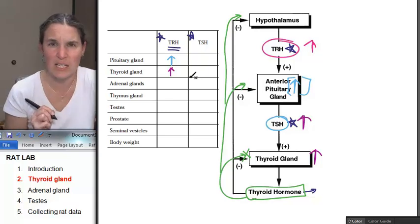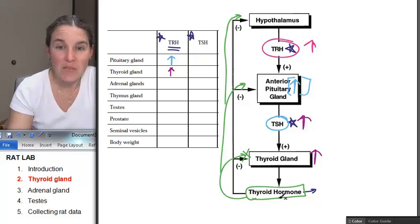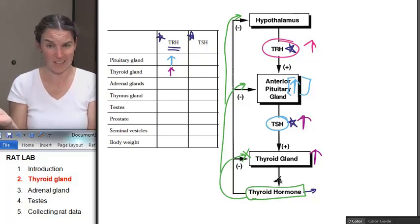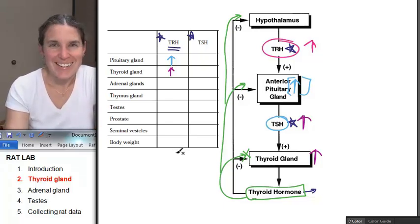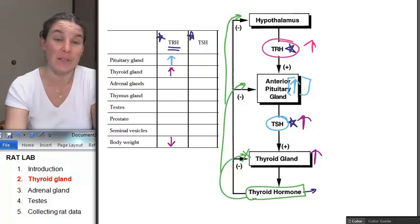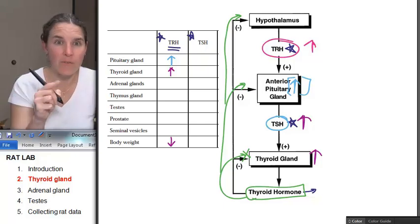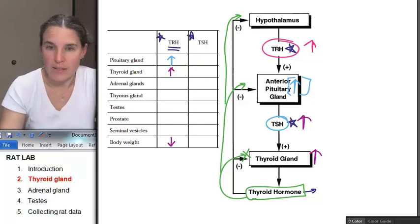Do you see the adrenal gland anywhere in here? Do you see the thymus gland mentioned? The testes, the prostate, the seminal vesicles, what about body weight? If we have massive amounts of, our thyroid gland is increased, we're actually probably going to produce lots more thyroid hormone. What's that going to do to your body weight? What did I say? Too much thyroid hormone is going to cause your body weight to go down. These are the characteristics that we're going to expect to see in our rat if the hormone is thyroid releasing hormone. Does that work for you?